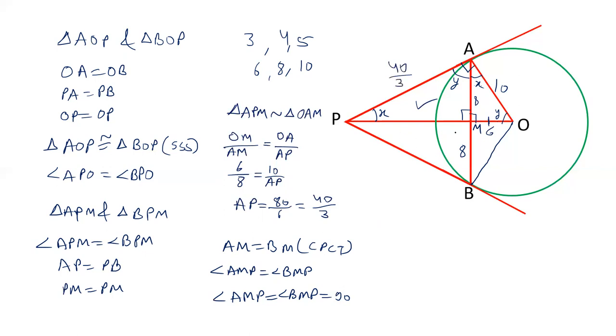And similarly we can find out the length of PM. 6 by 8 is equal to 8 by PM. OM upon AM is 6, AM is 8 and this is 8 upon PM. 8 into 8 is 64. 6 PM is equal to 64 and therefore PM is 64 by 6. That is 32 by 3. So the length of PM is 32 by 3. Length of PB is 40 by 3.